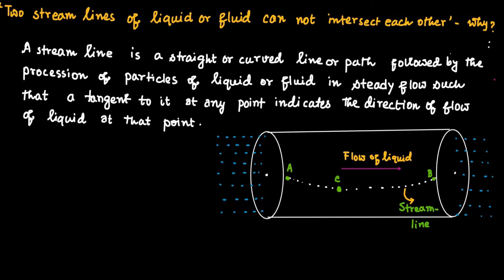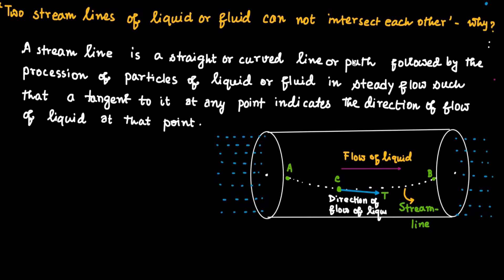At the point C on this streamline, if we draw a tangent CT, then CT is the tangent and this tangent indicates the direction of flow of liquid at the point C. This is the definition of streamline.